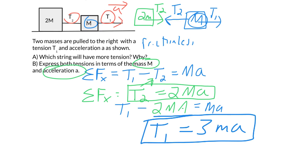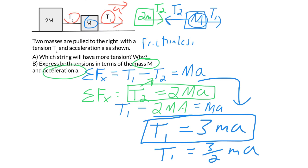We can also express this in terms of each tension. If we substitute MA — noting that T2 equals 2MA, so MA equals T2 over 2 — then T1 equals 3 halves T2, or 1.5 times T2.